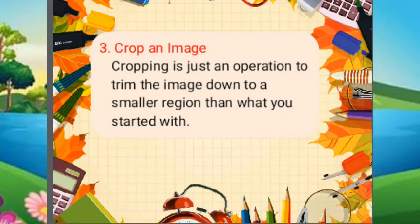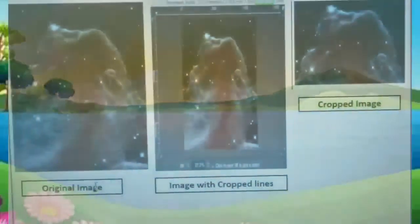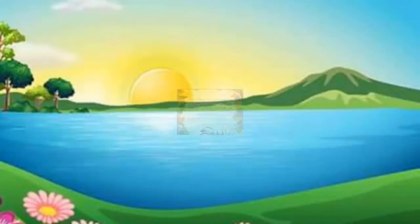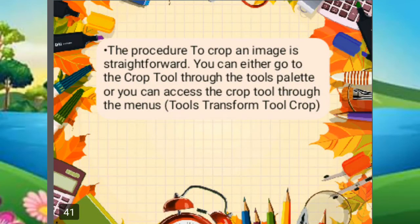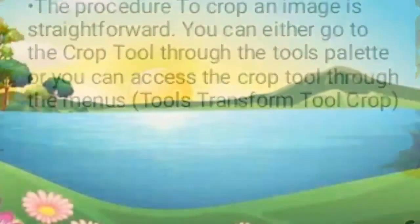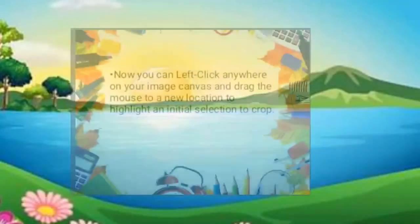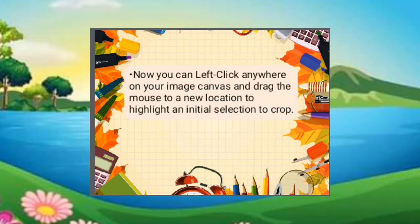Number three main point in using GIMP is cropping an image. Cropping is an operation to trim the image down to a smaller region than what you started with. The procedure to crop an image is straightforward. You can either go to the Crop Tool through the Tools Palette, or access it through the Menus via Tools > Transform > Crop. Then you can left-click anywhere on your image canvas and drag the mouse to highlight an initial selection to crop.